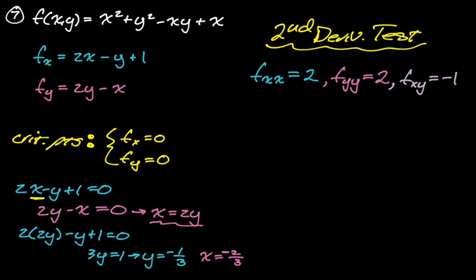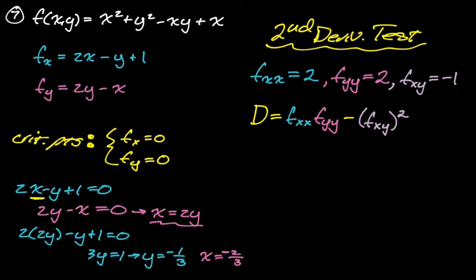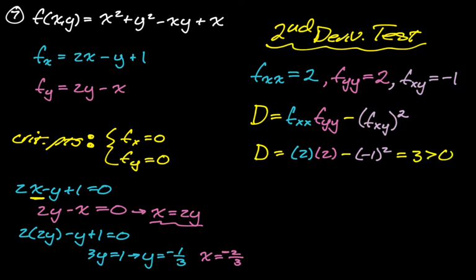We need to calculate D, where D = (partial xx)(partial yy) - (partial xy)². It's really minus (partial xy)(partial yx), but those are equal. In this case, all second partials are constants, so we don't need to substitute the critical point. We get D = 3, which is greater than 0.